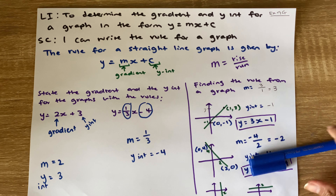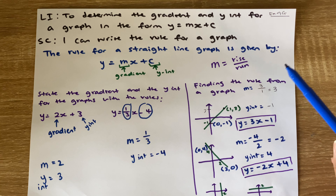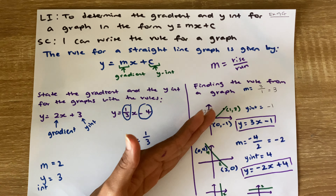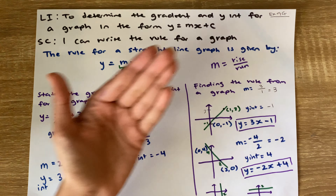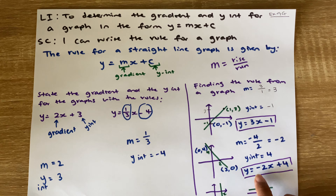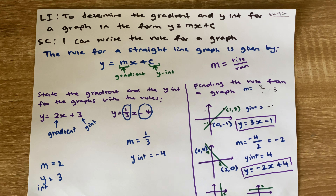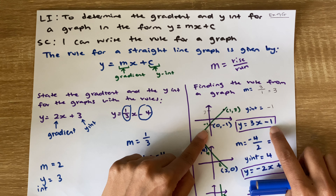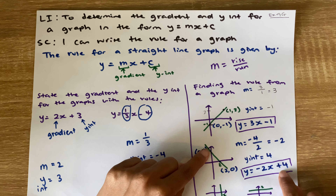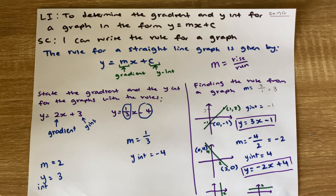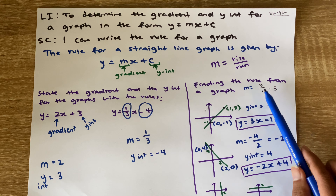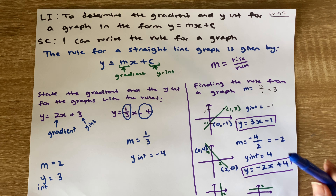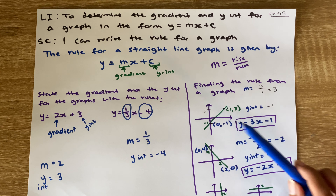Once I've written the rule, I should check. I said that my first graph's gradient is positive and the line points upward — correct. For the second one, I said my gradient is negative and the graph points downward — correct. Then I'll check my y-intercepts: the first was negative 1 — yes — and the second was 4 — yes. So I've written both rules correctly. You can also double-check your gradient by repeating the rise-over-run steps.